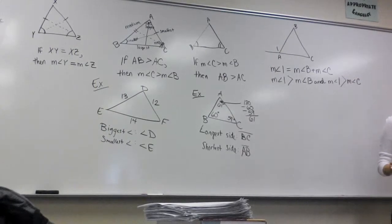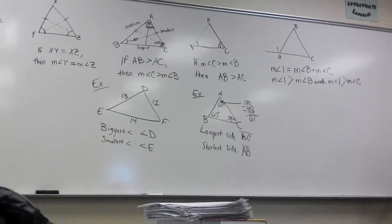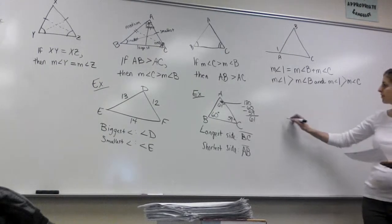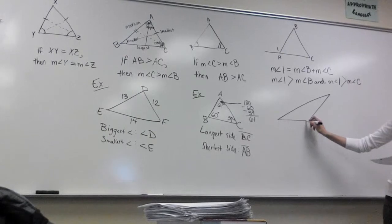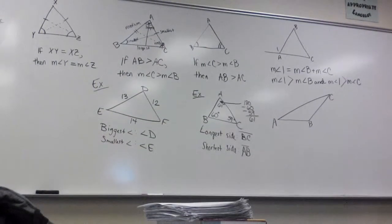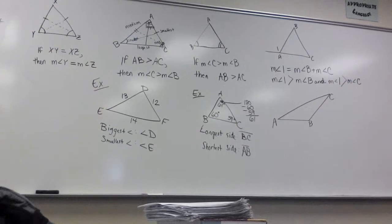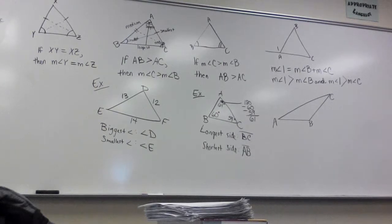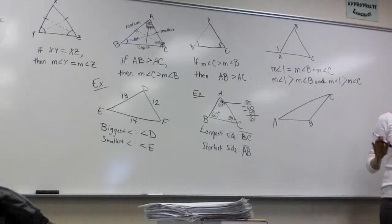The measure of the exterior angle has to be bigger than either individual interior angle it's across from. Now, the Triangle Inequality Theorem says the sum of the lengths of any two sides of a triangle is greater than the length of the third side. This goes with the front side of the paper — the angles have to have the same relationship as the sides across from them. Any two sides added together should be longer than the third side.